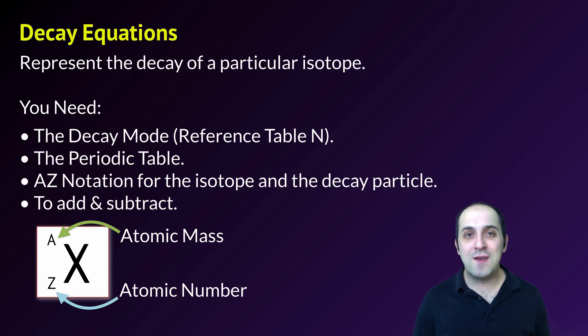You're going to need this AZ notation for both the isotope and the decay particle. And finally, you're going to need to be able to add and subtract, which sounds simple, but I'll point out a couple of places where you could make common mistakes.